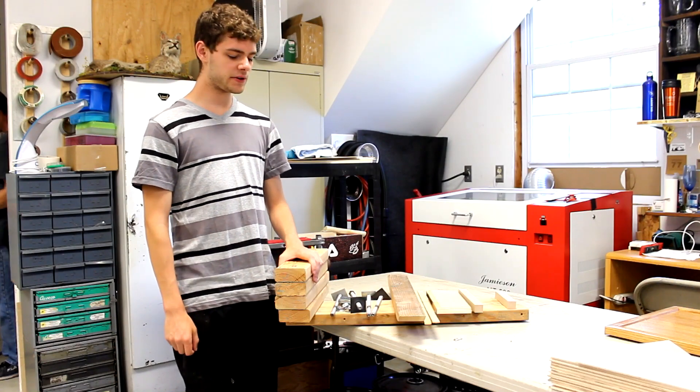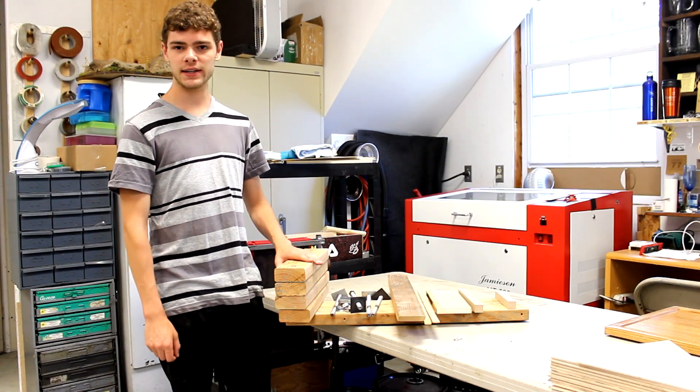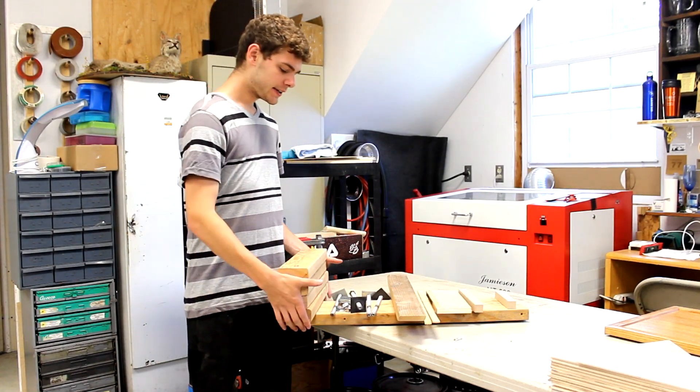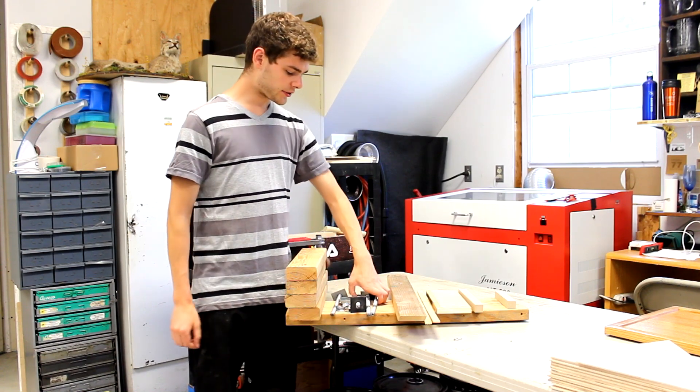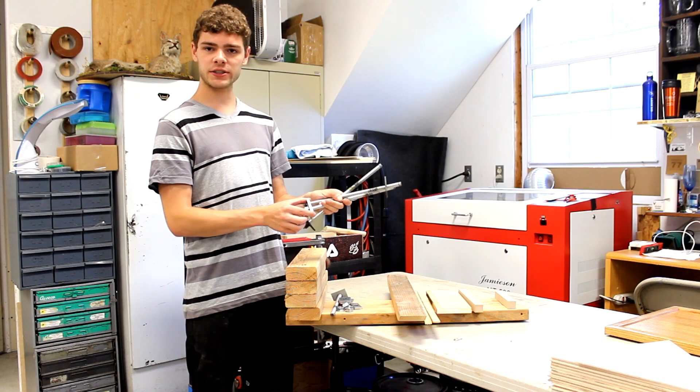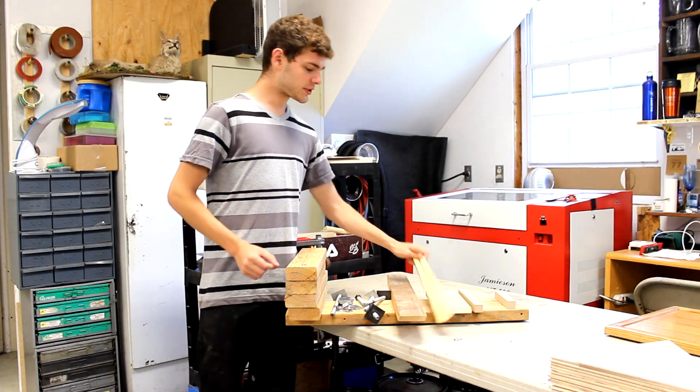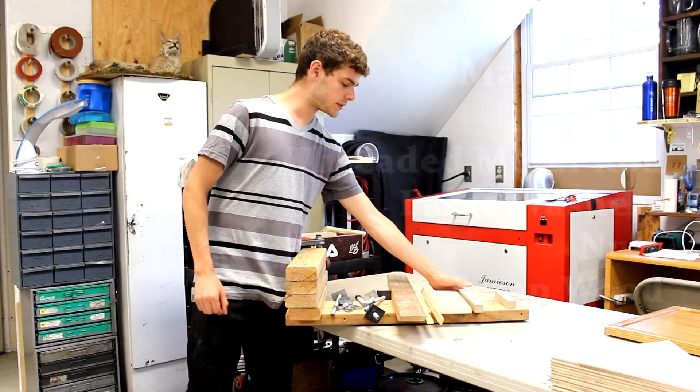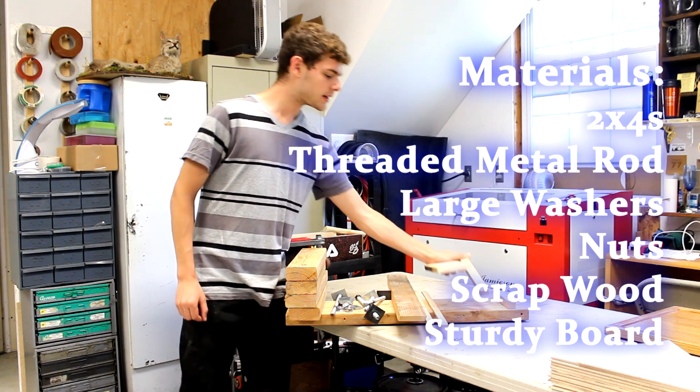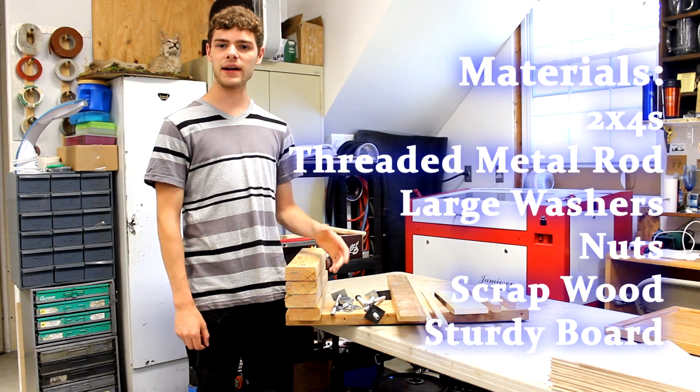Before I get started with how to actually build the press and use it, I want to quickly go over what you're going to need. As you can see, it's very basic materials. You're going to need some 2x4s, some threaded metal rod with nuts to go over it, some big washers or metal plates to serve as washers, some scrap pieces of wood that are pretty thin, and some additional scrap pieces of wood to make the kicktail press with. That's all you're going to need to build this press, and now we can get into how to actually build it.